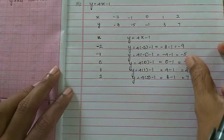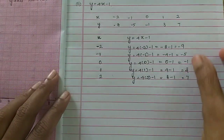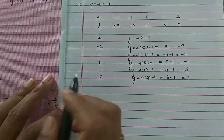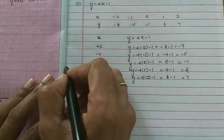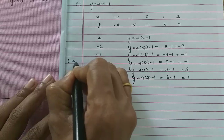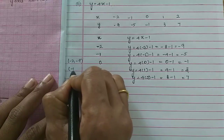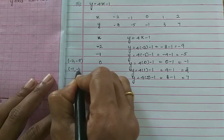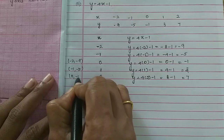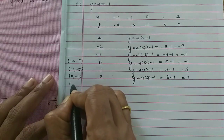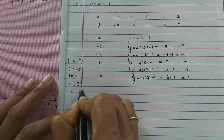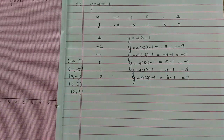So the ordered pairs are: minus 2, minus 9; then minus 1, minus 5; then 0, minus 1; then 1, 3; and 2, 7.